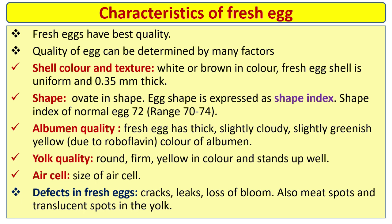This is the continuation of yesterday's class. Fresh eggs have best quality and the quality of egg can be determined by many factors like shell color and texture, shape, albumin quality, yolk quality, and air cell. The shell color and texture: white or brown in color, and fresh egg shell is uniform at 0.35 mm thick.